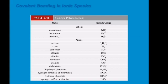Here are some common polyatomic ions. These are the polyatomic ions commonly used in ionic bonding. For cations, we have ammonium, hydronium, and mercury(I), each with their corresponding positive charges.